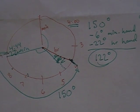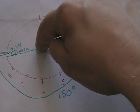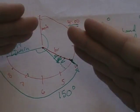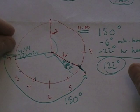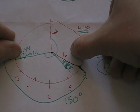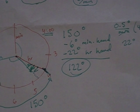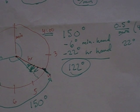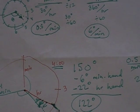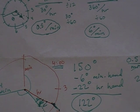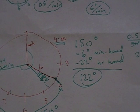The answer is 122 degrees. To recap: assume the hands point exactly at their respective numbers, find the base angle of 150 degrees, then adjust — the minute hand is one minute shy (6 degrees), and the hour hand moved 44 minutes at 0.5 degrees per minute (22 degrees). That gives 122 degrees. It's a classic problem — once you know the rates of 0.5 and 6 degrees per minute for the hour and minute hands, you can find the angle for any time.